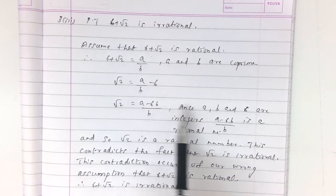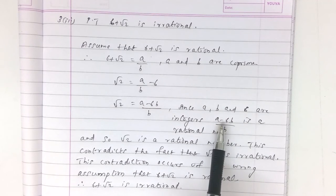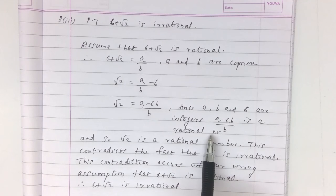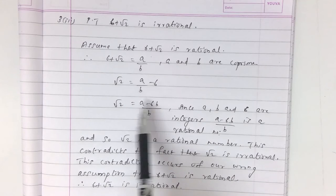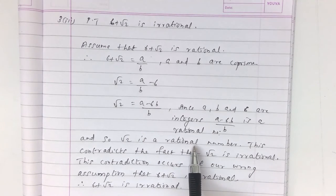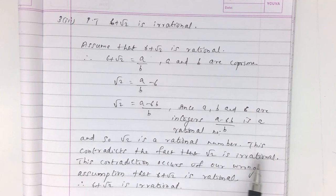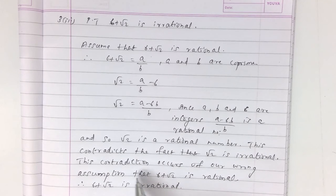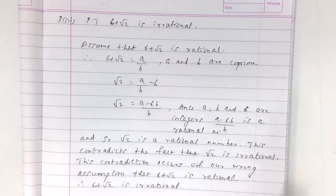Here A, B, and 6 are integers, so A minus 6B by B is a rational number — it fits the P by Q form of a rational number. But this contradicts the fact that root 2 is irrational. This contradiction occurs because of our wrong assumption that 6 plus root 2 is rational. Therefore, 6 plus root 2 is irrational.